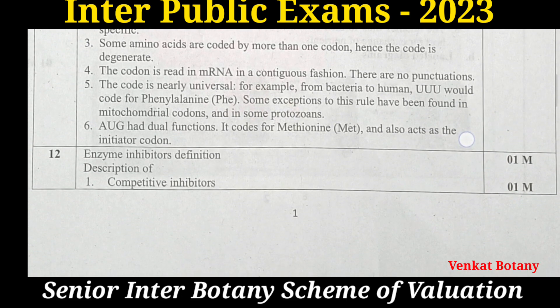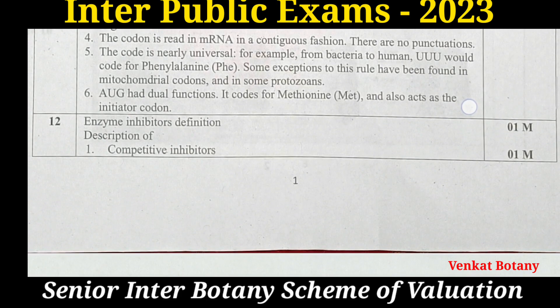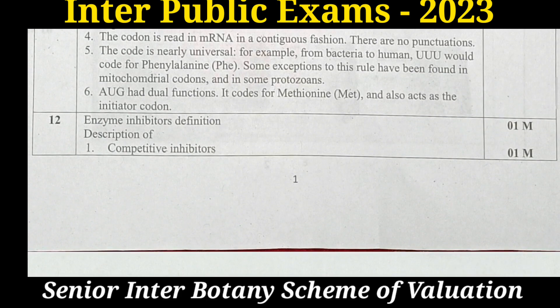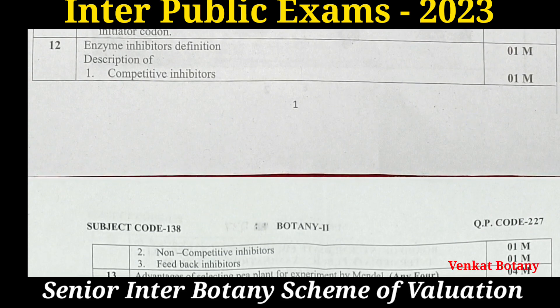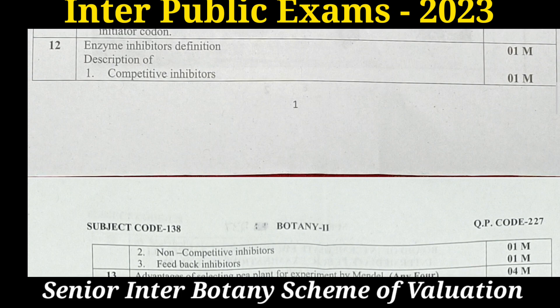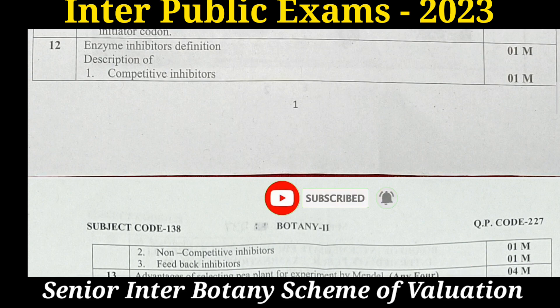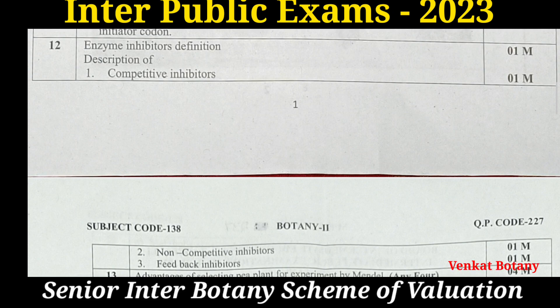Question 12: Write briefly about enzyme inhibitors. Enzyme inhibitors include competitive inhibitors, non-competitive inhibitors, and feedback inhibitors. Write the definition of enzyme inhibition for one mark, then one mark each for competitive inhibitors, non-competitive inhibitors, and feedback inhibition — each with its definition. Each answer carries one mark.